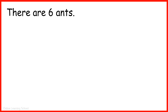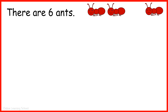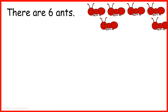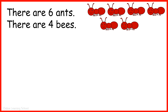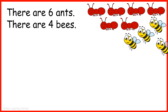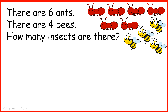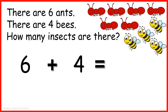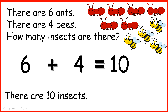There are six ants: one, two, three, four, five, six. There are four bees: one, two, three, four. How many insects are there? Six plus four equals ten. There are ten insects.